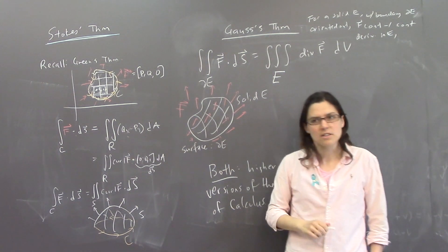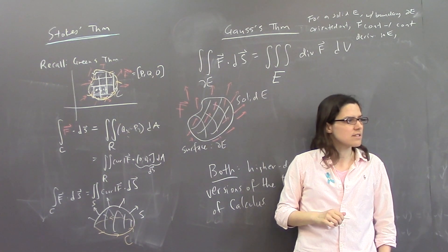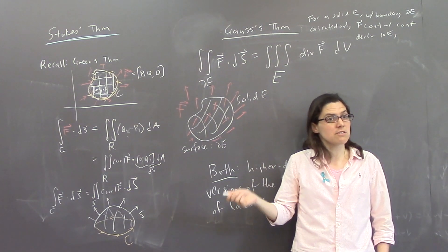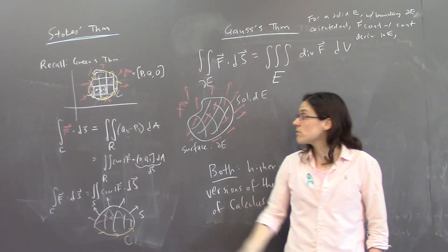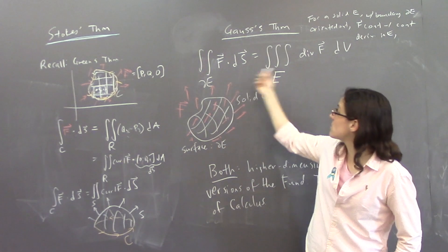One of which we already saw, we saw the fundamental theorem of line integrals was, like, a, was from dimension 0 to dimension 1, this is from dimension 1 to dimension 2, and this was dimension 2 to dimension 3.